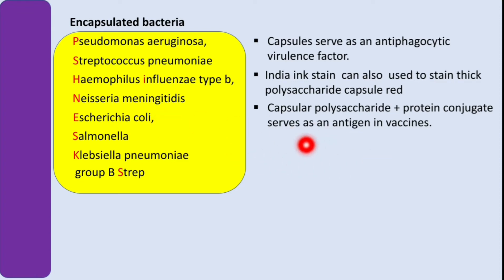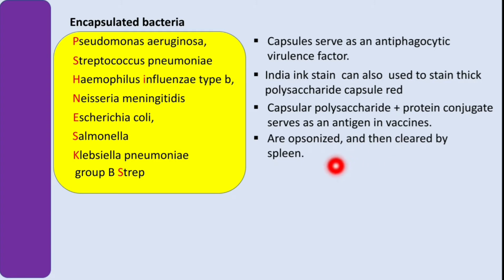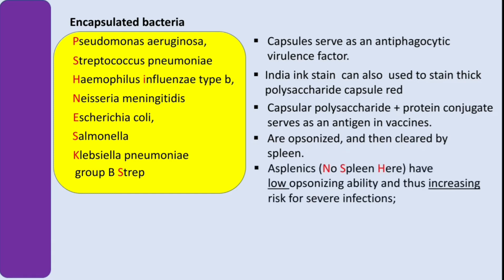How are these bugs cleared from our bodies? They are opsonized and then cleared by the spleen, so the spleen plays a significant role in eradication of encapsulated bacteria. Asplenics — people without a spleen, whether due to functional asplenia such as sickle cell anemia, or anatomical absence of the spleen — have low opsonizing ability, thus increasing the risk for severe infections.